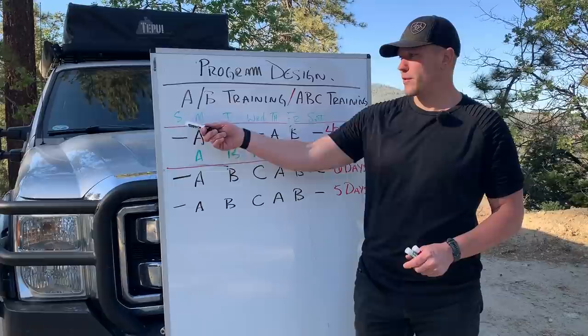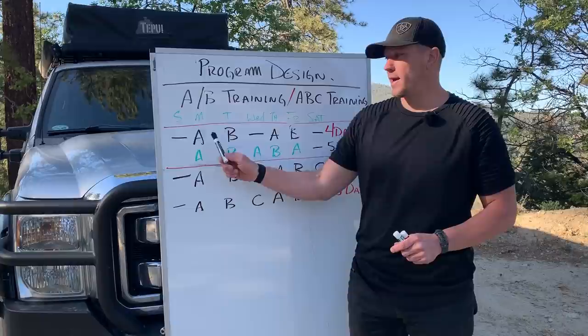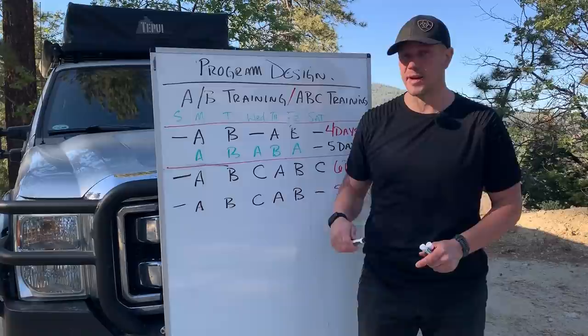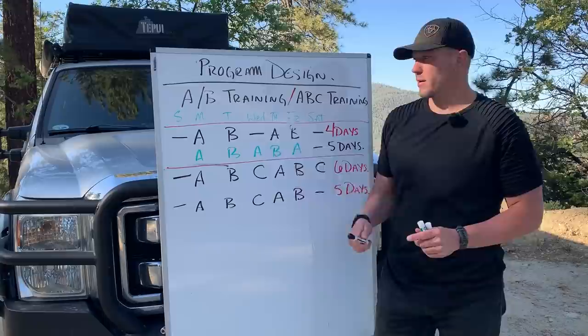What we have here is a Sunday through Saturday AB program. Most people run it AB Monday, Tuesday, take a day off, AB Thursday, Friday, Saturday, Sunday off — three days off per week with two separate programs and two separate ideas.